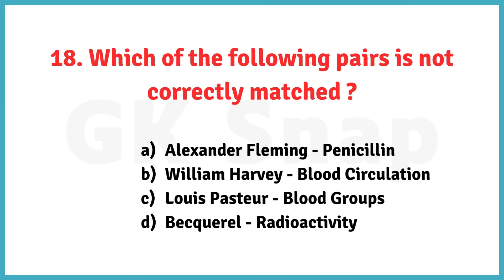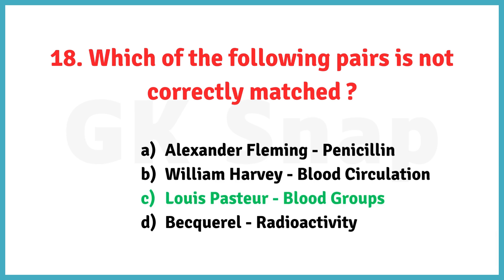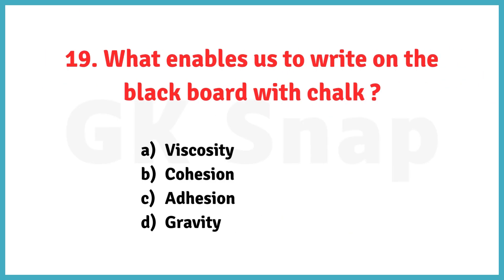Which of the following pairs is not correctly matched? Correct answer is option C. Louis Pasteur — Blood groups. What enables us to write on the blackboard with chalk? Correct answer is option C. Adhesion.